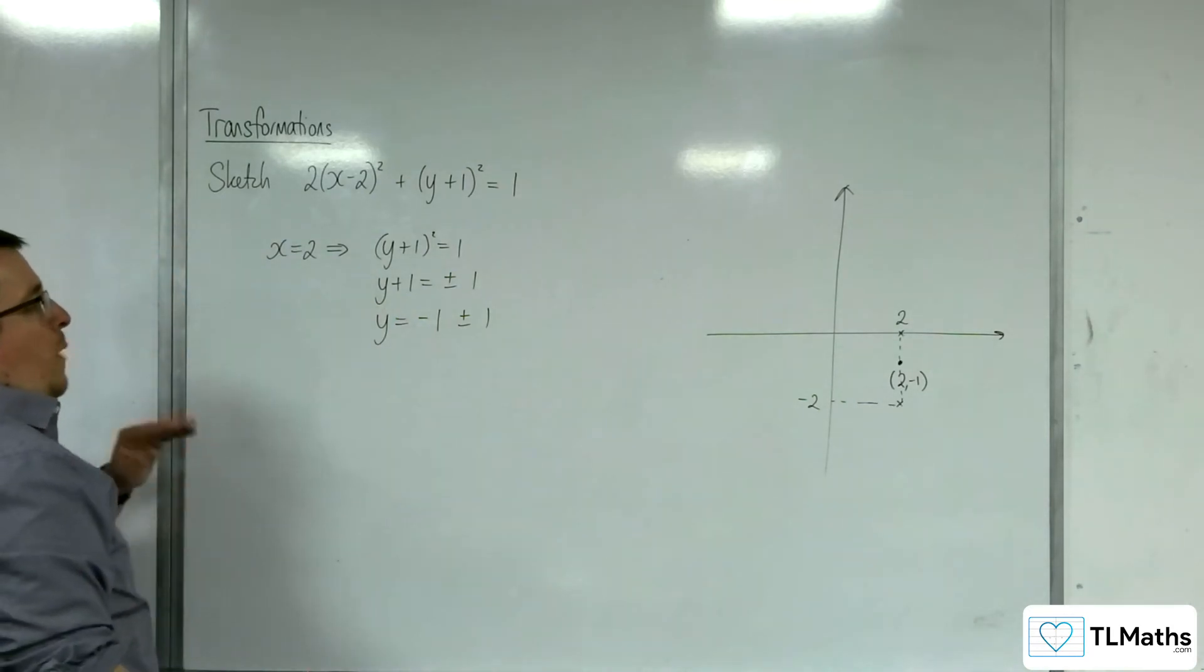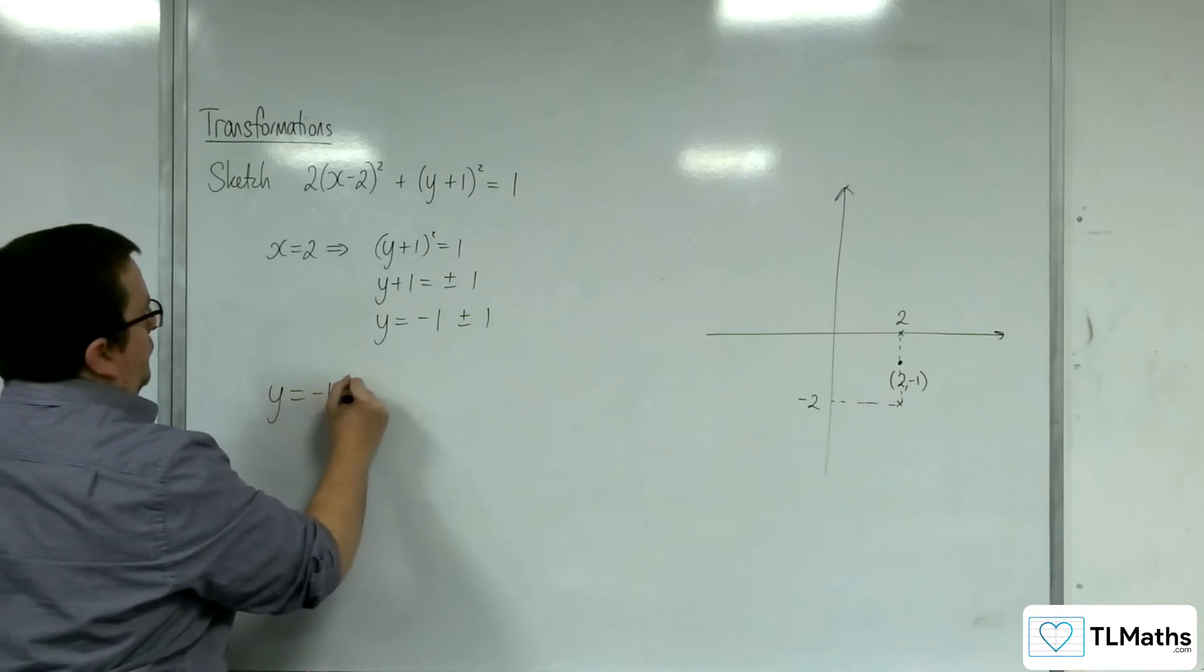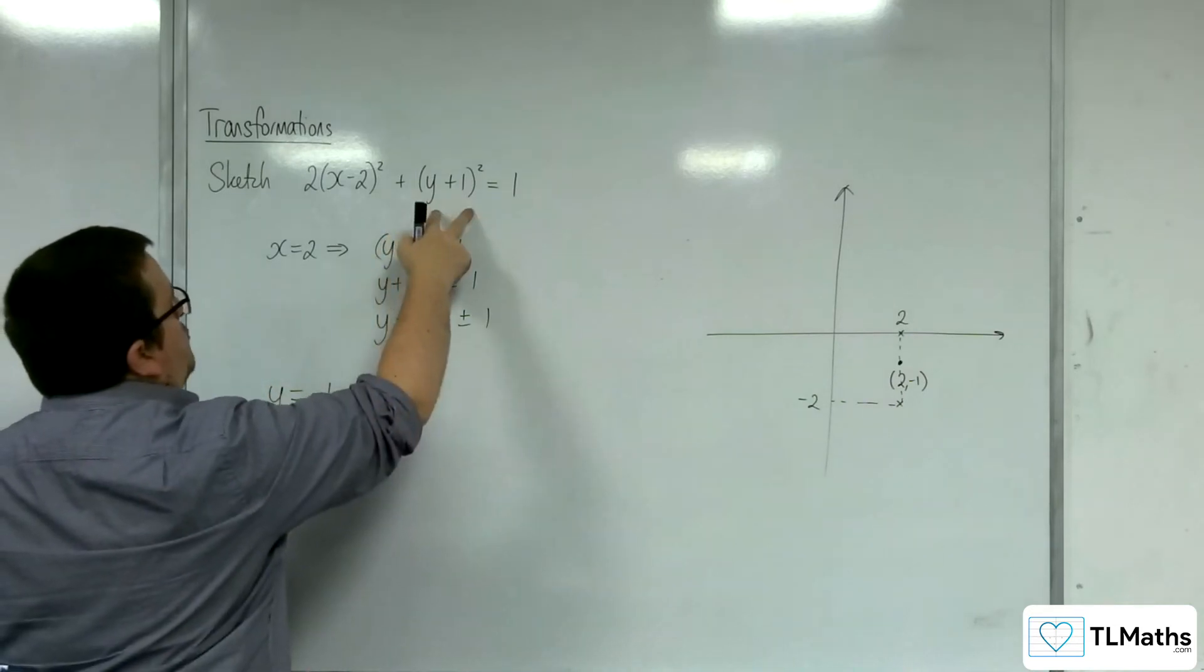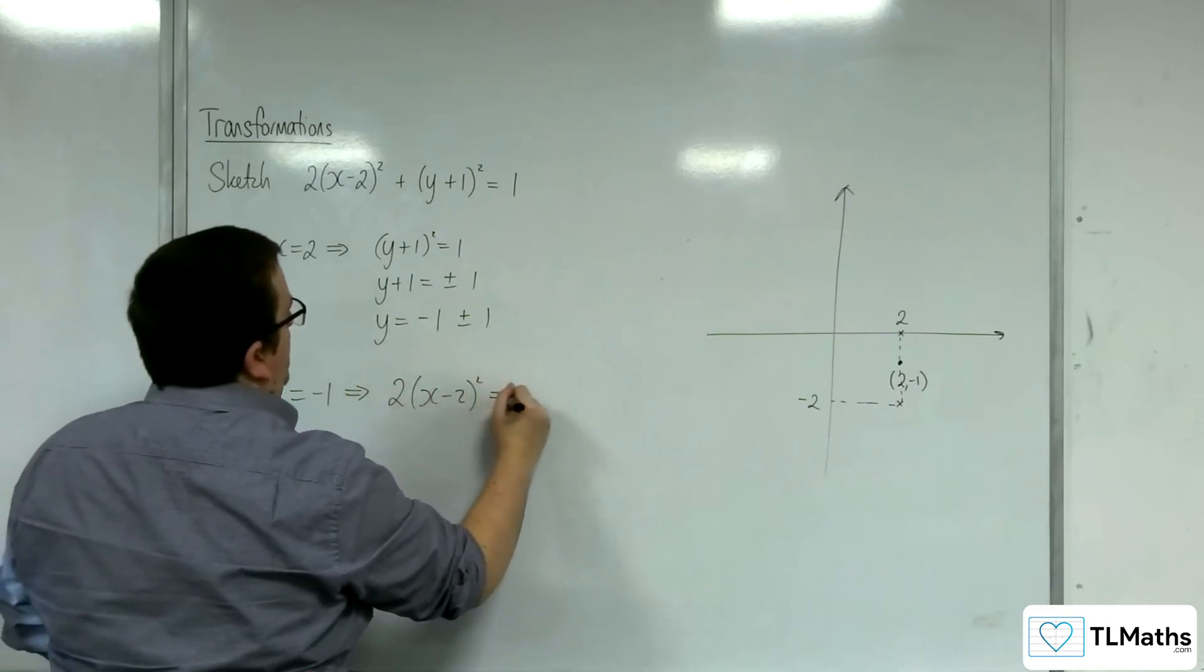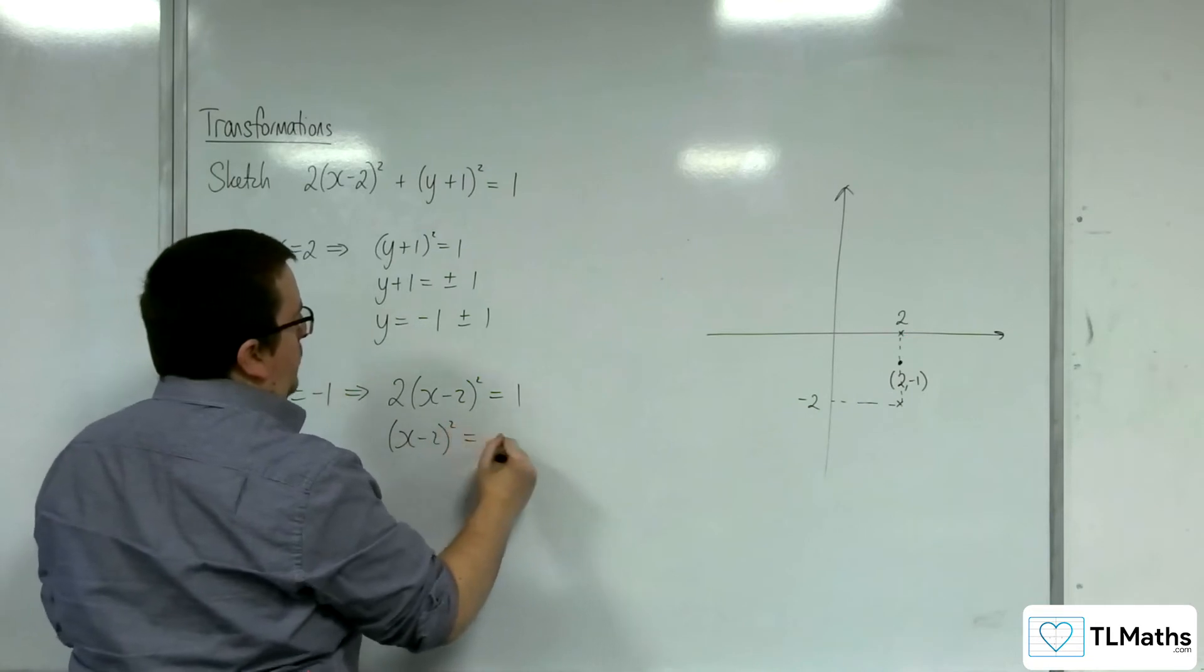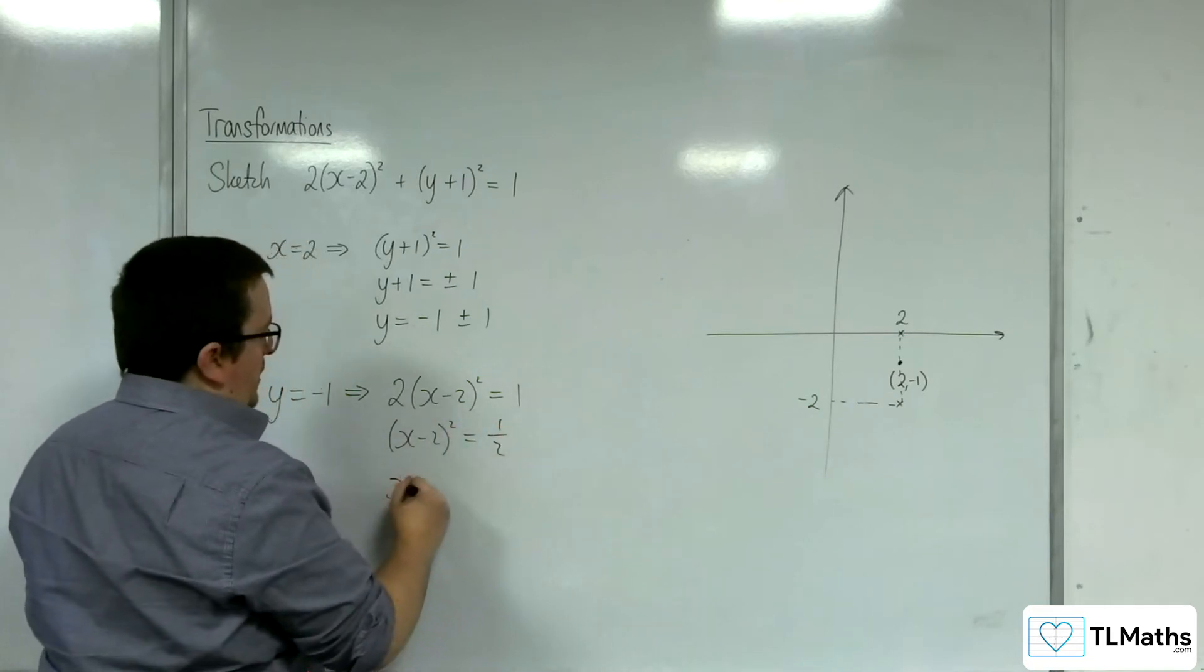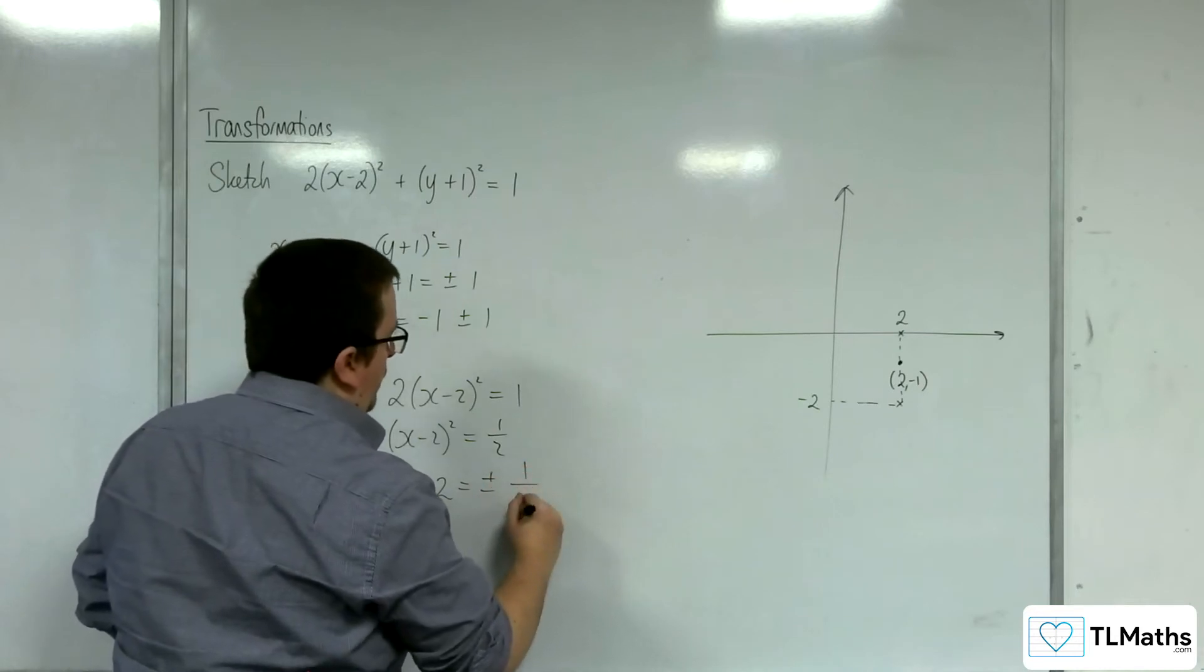Next up, when y = -1, this bracket's going to be 0. So I'm going to have 2(x-2)² = 1. So (x-2)² is going to equal 1/2. So x-2 is going to equal ±1/√2.